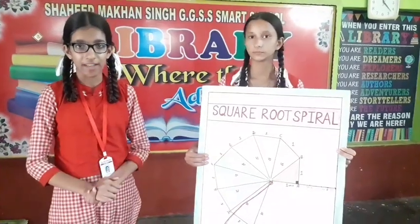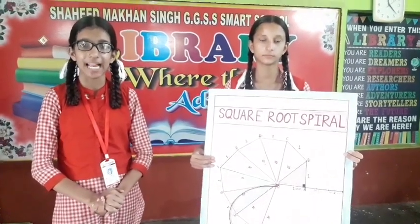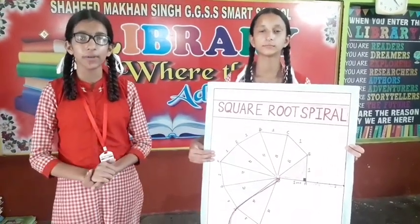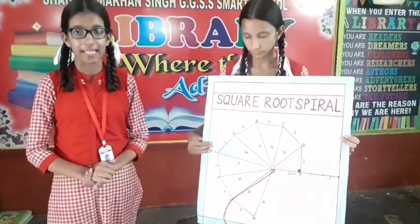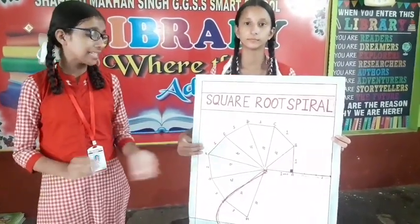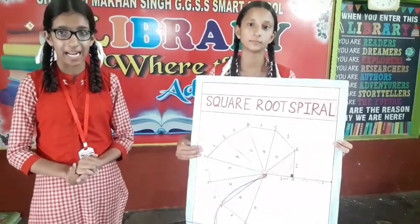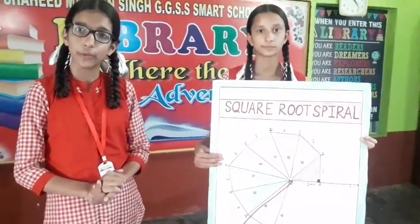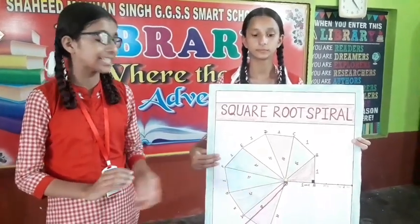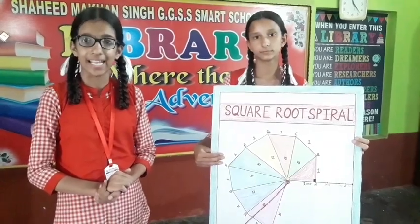Hello, good morning everyone. My name is Pai. I am reading at Shri Makhansi, a girls' senior secondary school, from class 9th. Today I am going to present the model of the Square Root Spiral. The Square Root Spiral is a geometric structure which is based on key contents: 1, 5, and the square root of 2. The continuous application of the Square Root Spiral uses the Pythagorean Theorem of the right triangle.